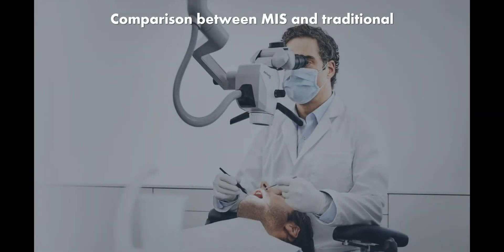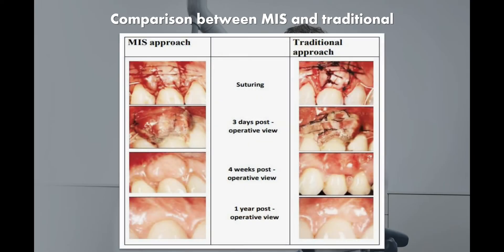Comparing minimally invasive surgery (MIS) with traditional surgery: the ideal site for MIS is bone grafting in isolated, usually interproximal defects that do not extend significantly beyond the interproximal site. Traditional surgery better handles generalized horizontal or multiple interconnected vertical bone defects. In MIS, the incision is designed to conserve as much tissue as possible and should be made as separate incisions, not continuous across interproximal tissue, unlike other periodontal surgeries.